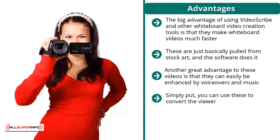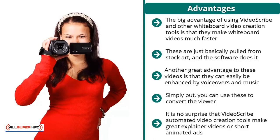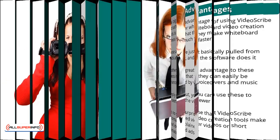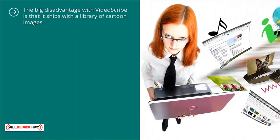A lot of times it turns on the quality of your script, but the quality as well as the setup is good enough to convert the viewer. In addition to voiceovers and music, you can also enhance it with video clips and other elements. It is no surprise that Video Scribe automated video creation tools make great explainer videos or short animated ads.